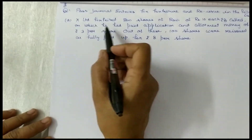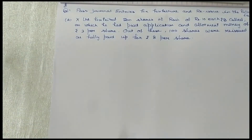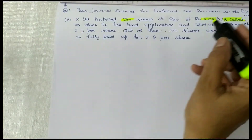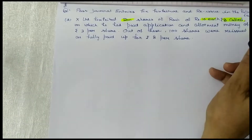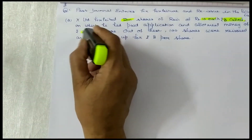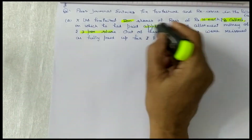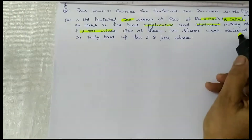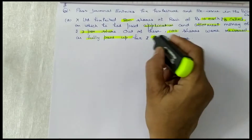X Limited forfeited 200 shares of Rs.10 each, 8 called up. He had paid application and allotment money of Rs.3 per share. Out of these shares, 100 were reissued as fully paid at Rs.8 per share.